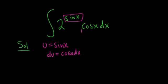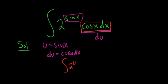And it works out perfectly, right? This piece here — this is our du. So our integral becomes the integral of 2 to the u, because u is sine x. And this leftover piece here, this is just du.